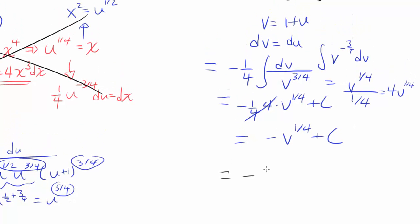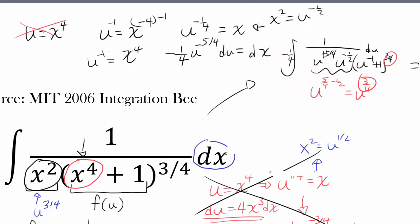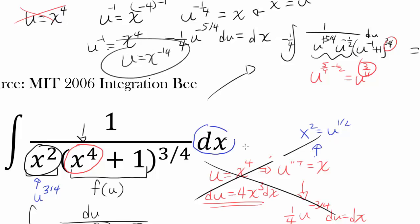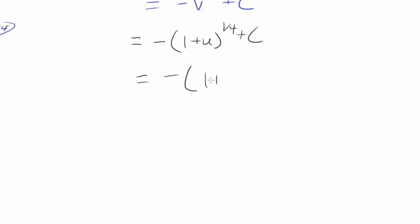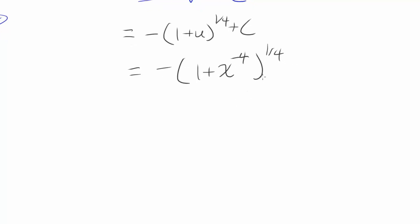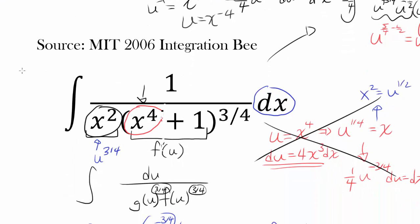Our v was 1 plus u, so we have negative (1 plus u) to the one-fourth plus c. And our u was x to the negative four. So this simplifies to negative (1 plus x to the negative four) to the one-fourth plus c. So the integral turns out to be negative (1 plus x to the negative four) to the one-fourth power, plus the constant of integration.